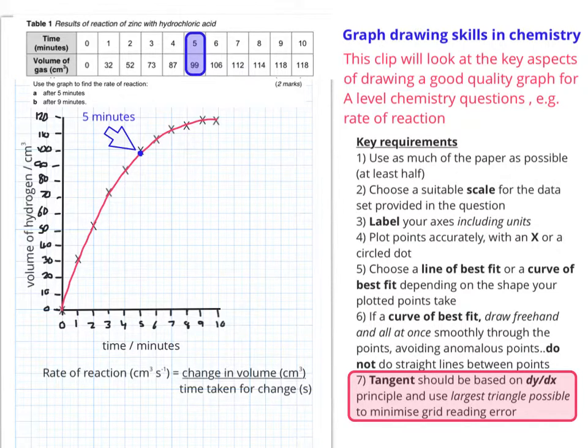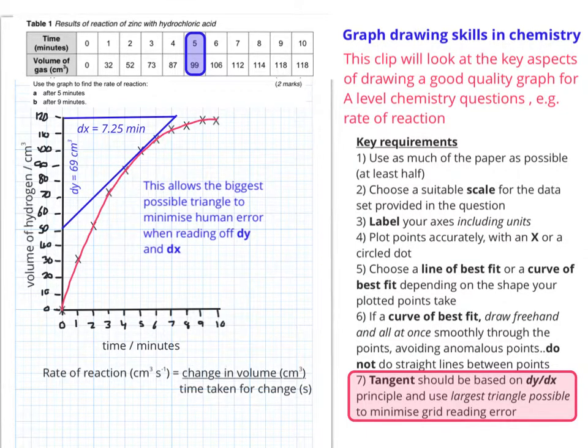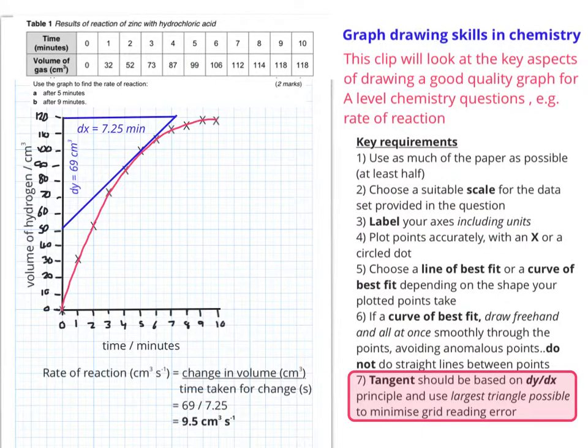Looking at the point at five minutes, we're now going to draw a tangent using the maximum possible space within the grid section that I've chosen from my graph. The tangent should cut the y-axis and take up as much of the square grid section as possible, which then allows us to put in dy and dx. I'm going to go for 7.25 minutes as dx and dy being 69 centimeters cubed. Working out the rate of reaction, I arrived at about 9.5 centimeters cubed per second to the minus one.